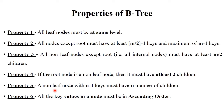Next property: a non-leaf node with n-1 keys must have exactly n children. And all the key values in a node must be in ascending order. We will explain how exactly these properties work through an example.